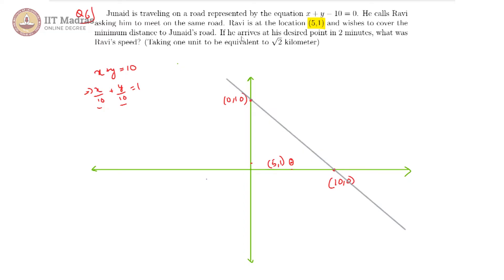And Ravi wishes to cover the minimum distance to Junaid's road. We know that minimum distance is achieved when you go perpendicular, that is normal to the other line. We can see that Ravi goes along this path and intersects somewhere over there, let us call this point p.